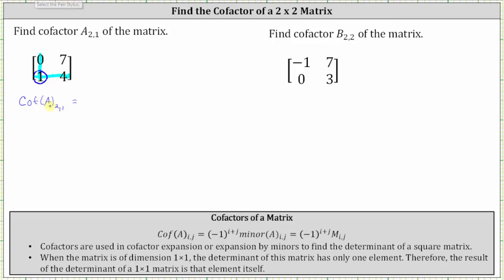So the cofactor of a sub two comma one is equal to negative one raised to the power of two plus one, times the determinant of the matrix formed by eliminating row two and column one from matrix A. We need to find the determinant of the one by one matrix where the element is seven, which we indicate using vertical bars. We don't want to confuse these vertical bars with absolute value. If we have a one by one matrix, the determinant of the matrix is equal to the element itself.